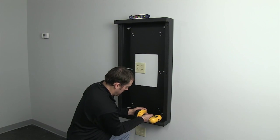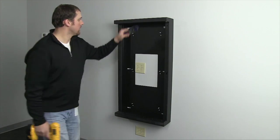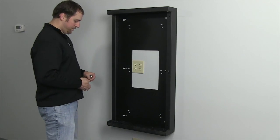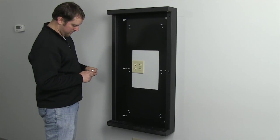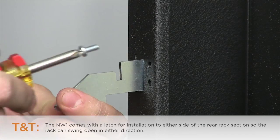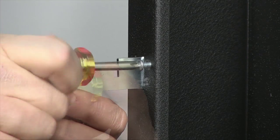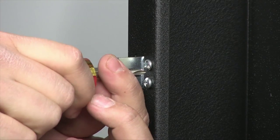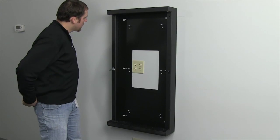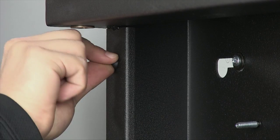Next, determine which direction the front section of the wall rack is going to swing out. Grab the latch and mounting hardware and install it to the rear rack section as shown. Also, rubber bumpers are provided and can be inserted into the pilot holes on the same side as the latch.